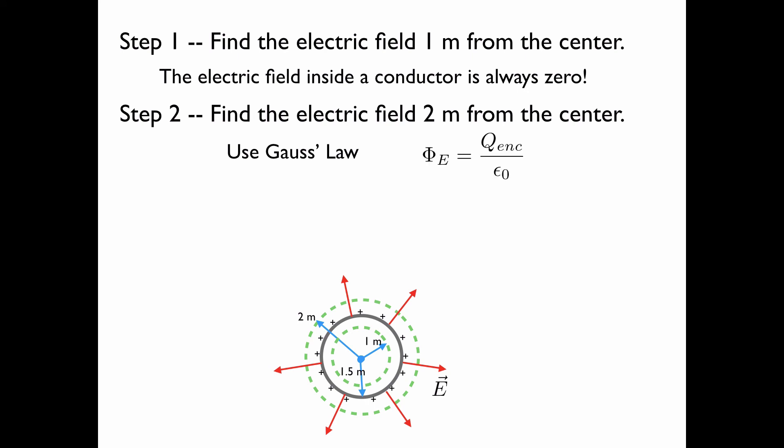I will use that the total electric flux, which I denote by phi sub e, is equal to the charge enclosed by the surface, divided by epsilon naught, where epsilon naught is a fundamental parameter called the permittivity of free space.